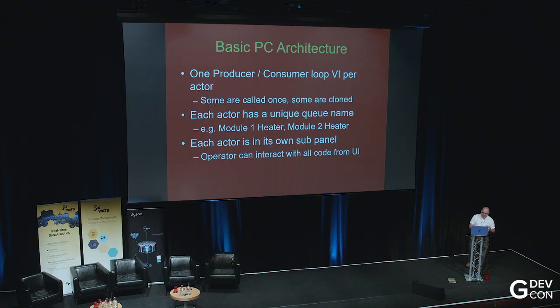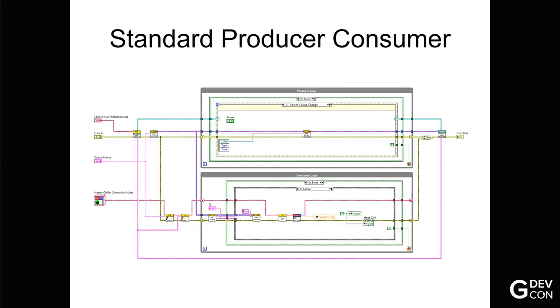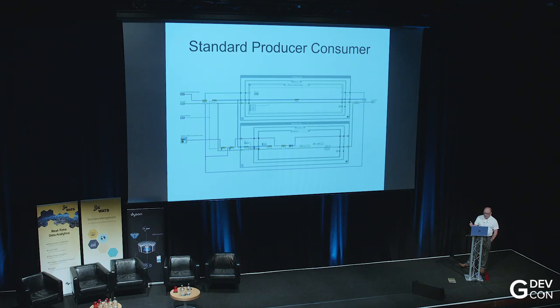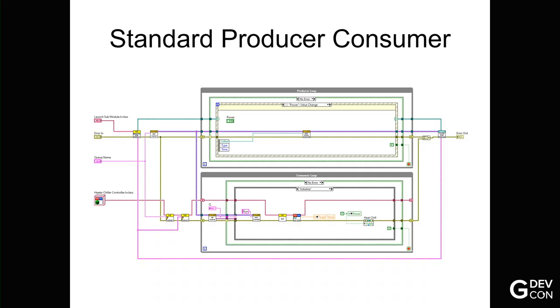Each actor is in its own subpanel. Then the subpanel name is the same as the name of the VI, just to make life easy for you. It means, then, that the operator can interact with all the code from the user interface. So rather than having tabs if you want to, you are able to talk to the code at several levels of operation. So that's just our standard producer-consumer loop. In the initial side there, we're generating our user events, and we are registering for events in the top level. We've got a queue, tell the producer-consumer what its queue name is, and then, in the bottom, our standard operations. So we'll have initialize, run, and quit, and anything data, any of the data that we want to change. And I'll show you this when I demo the code, hopefully.